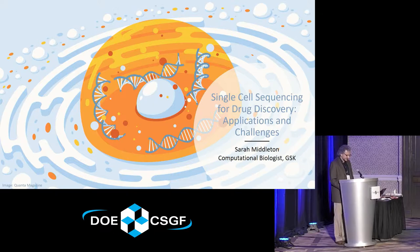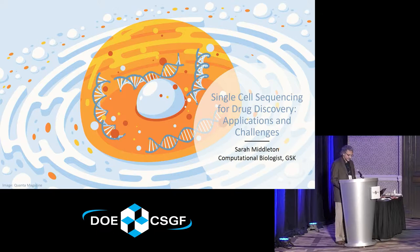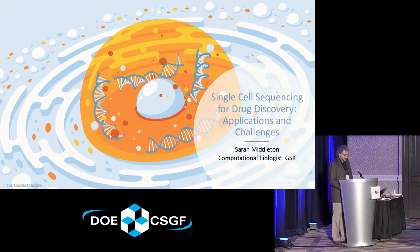Dr. Middleton earned her PhD in Genomics and Computational Biology in 2017. She is now a Computational Biologist at GlaxoSmithKline. Sarah's selection as a 2018 House Scholar reflects both her outstanding scientific achievements and her demonstrated leadership and character. Sarah's research attacked the longstanding problem in computational biology of modeling RNA structure from its primary sequence. She developed a novel approach called NoFold that could infer RNA secondary structures by extracting features from the primary sequence without explicitly solving the structural folding problem.